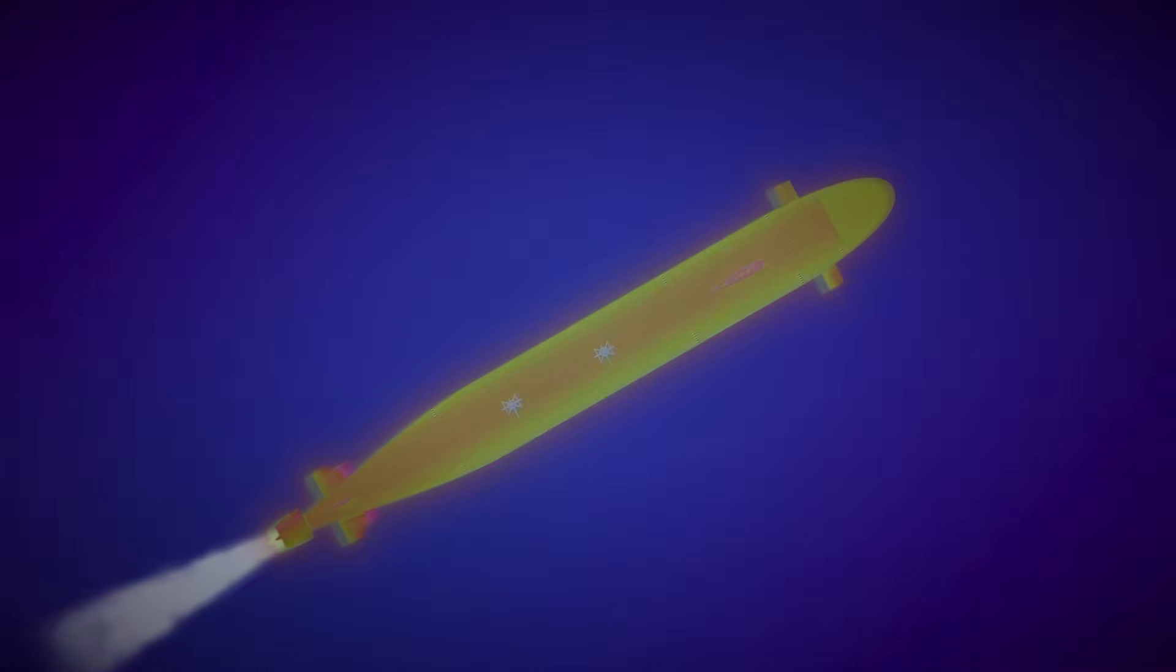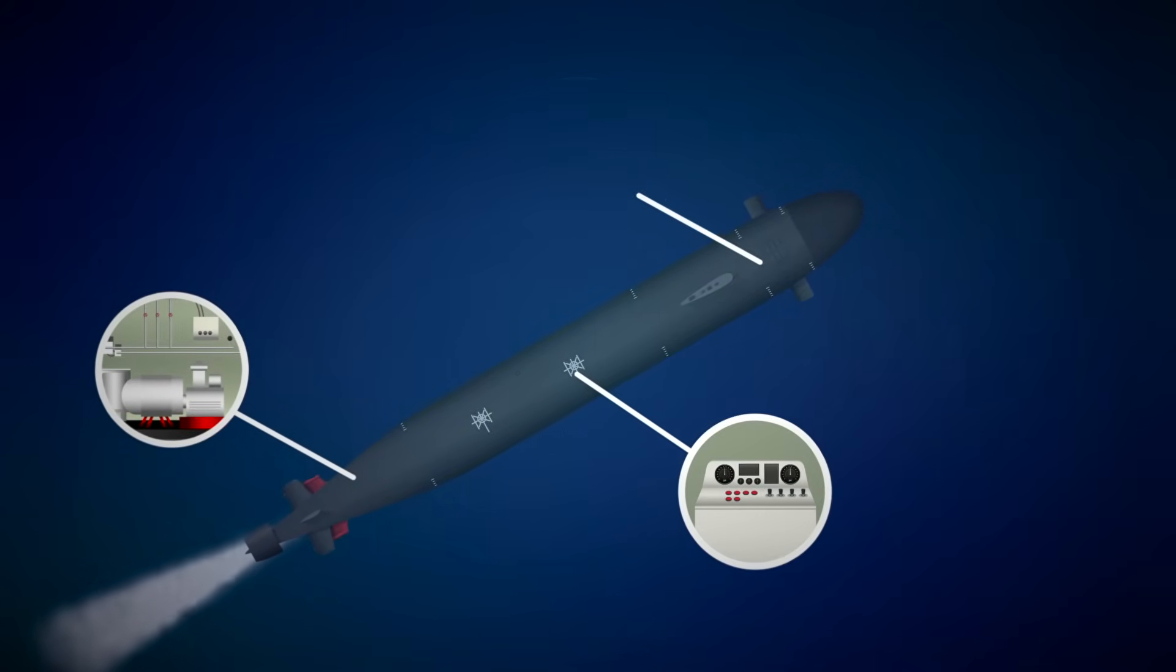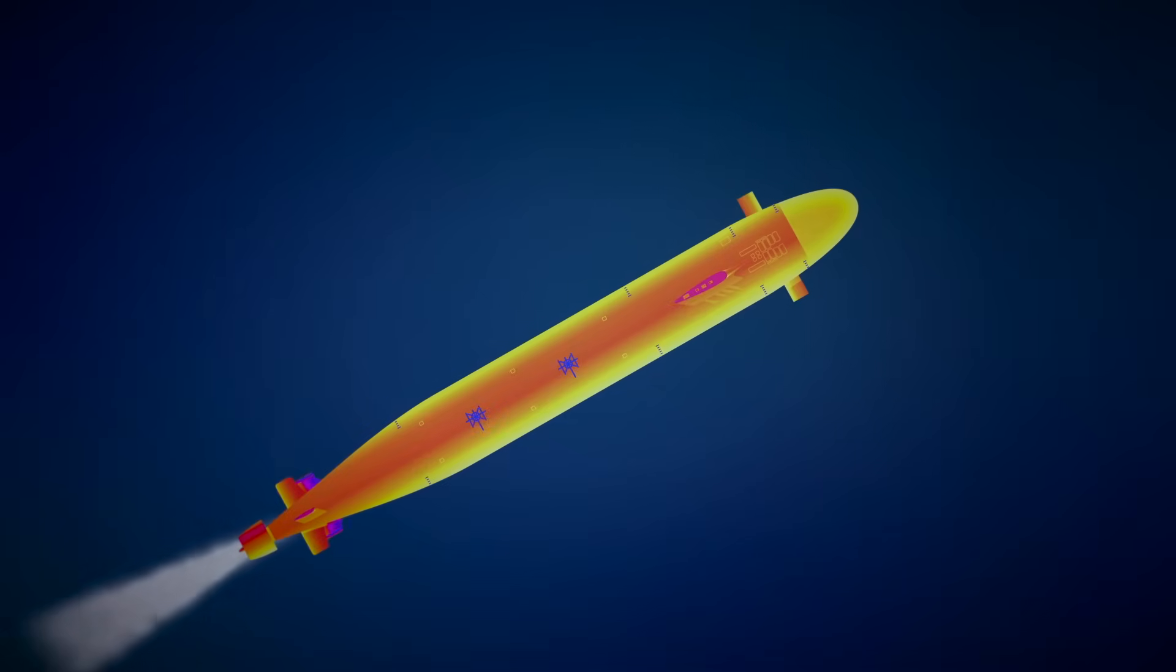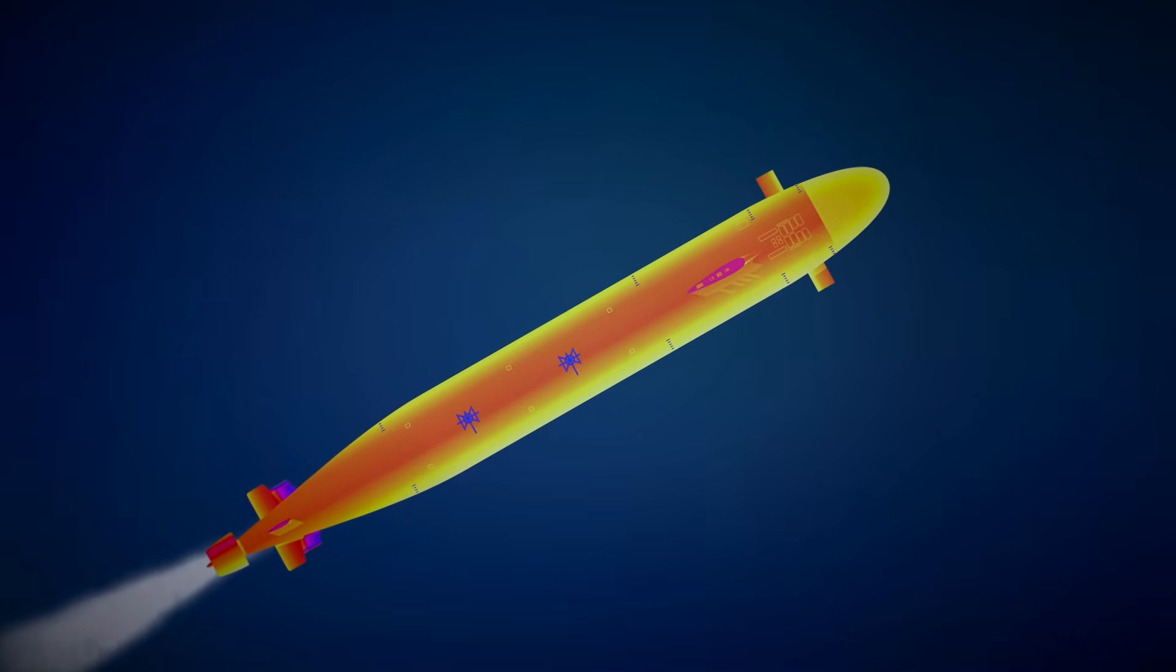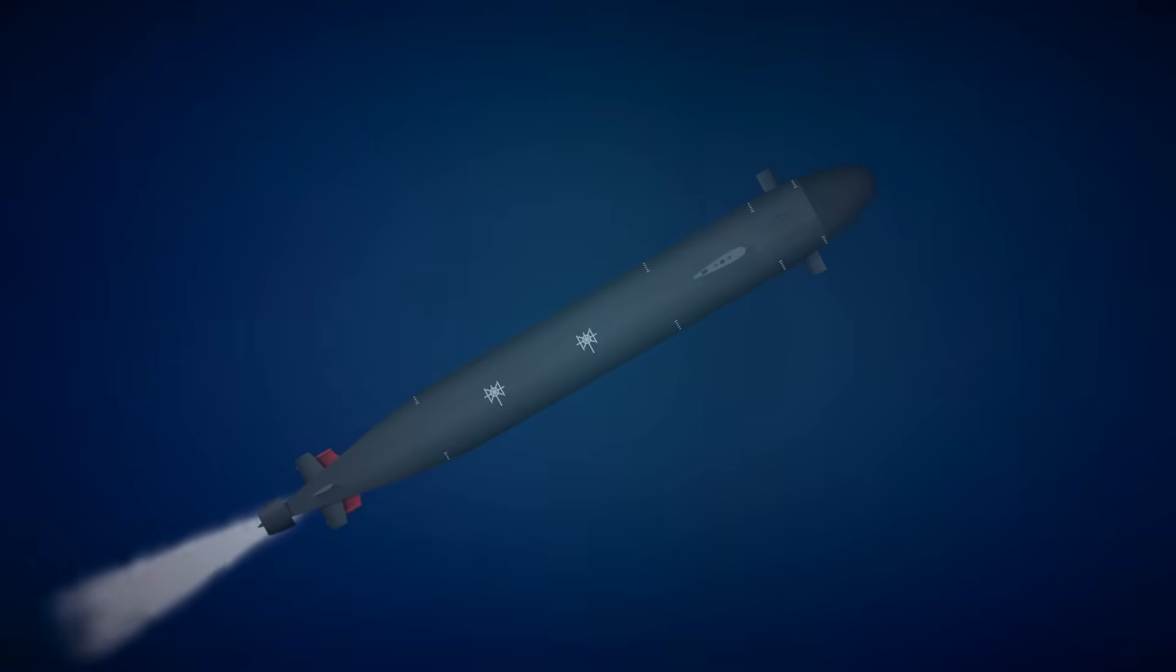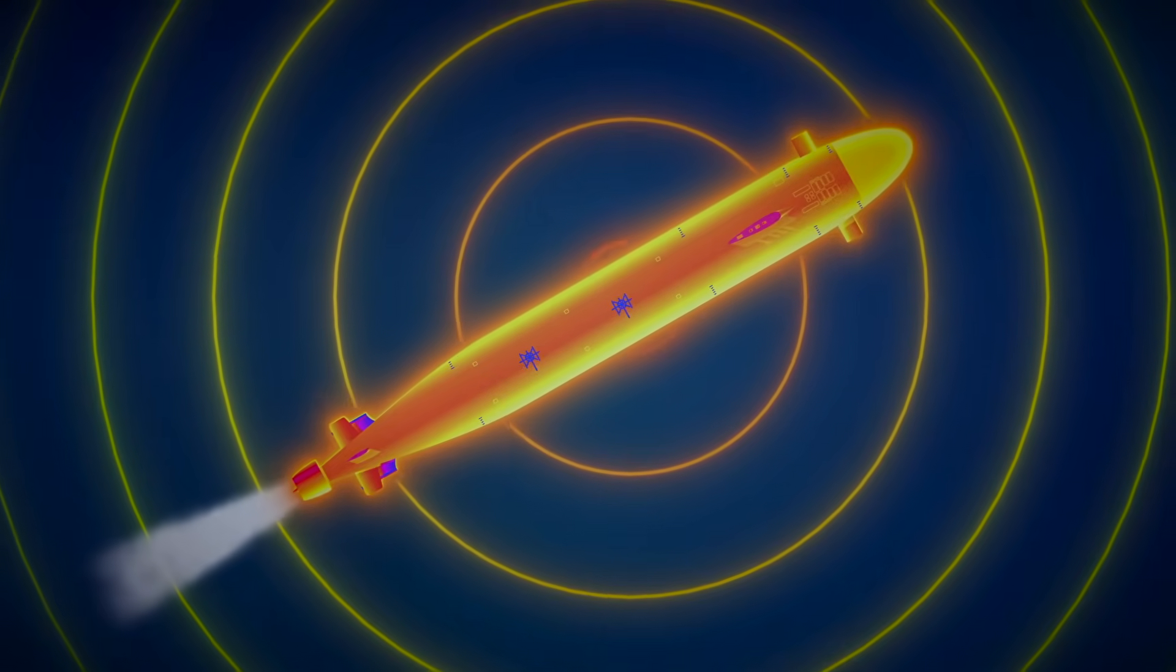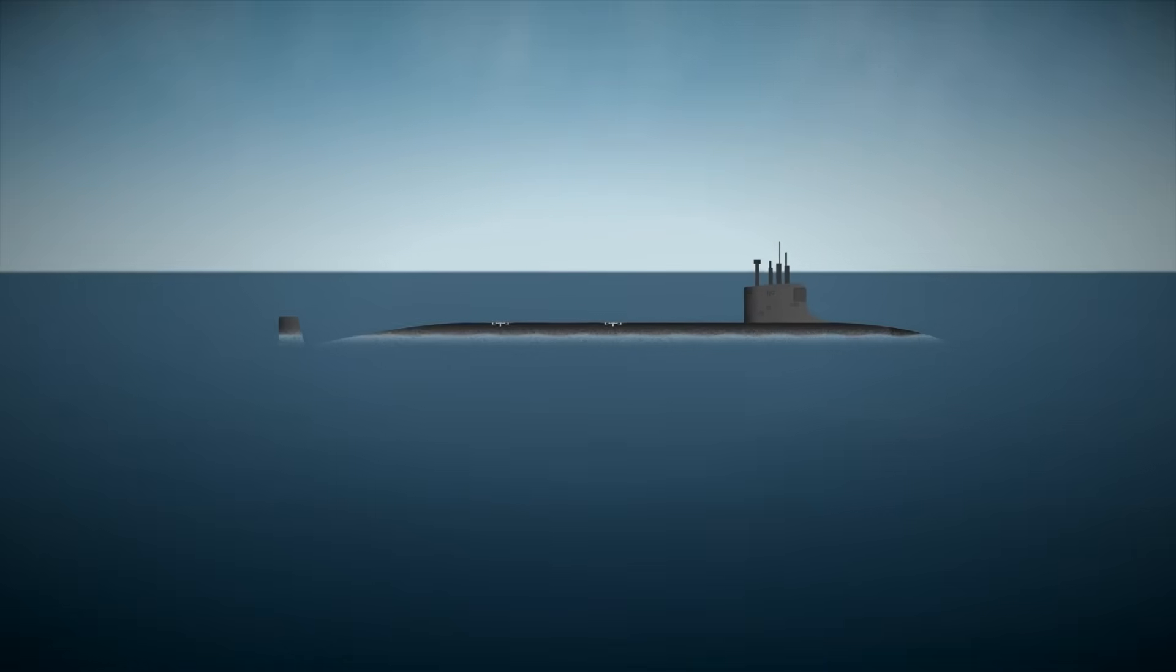Then there's heat. Submarines generate a lot of heat from engines, electronics, and even the crew. This heat can leak out through the hull and create a thermal trace that infrared sensors can pick up. So, designers add cooling systems, insulate hot machinery, and vent warm water out in slow, controlled ways to avoid thermal detection.